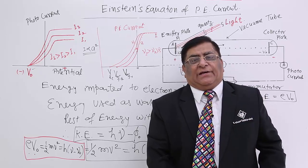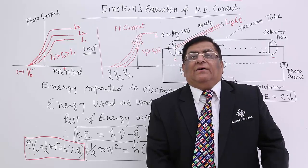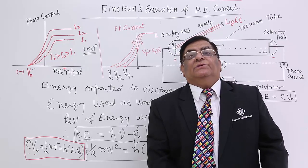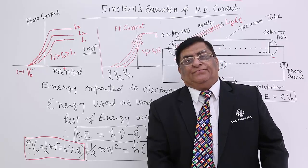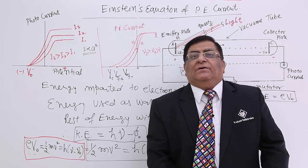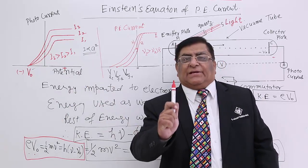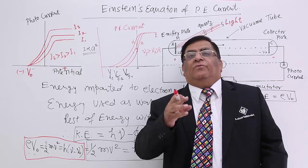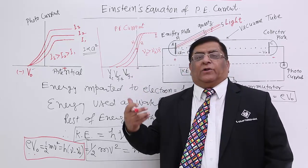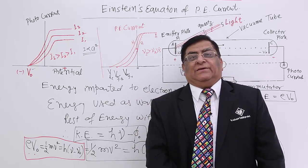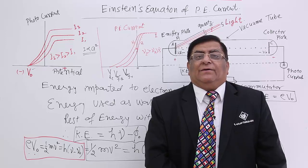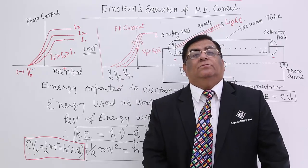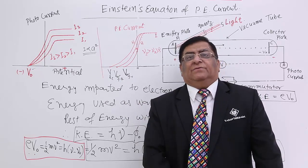In this discussion we have talked about light coming as photons with frequency. Now, seeing all the properties of light, we have come to certain properties of the photon. In the next lecture we will see what the concept of the photon is, what its properties are, and how this experiment could not be explained by wave theory and how this has proved that wave theory is wrong.